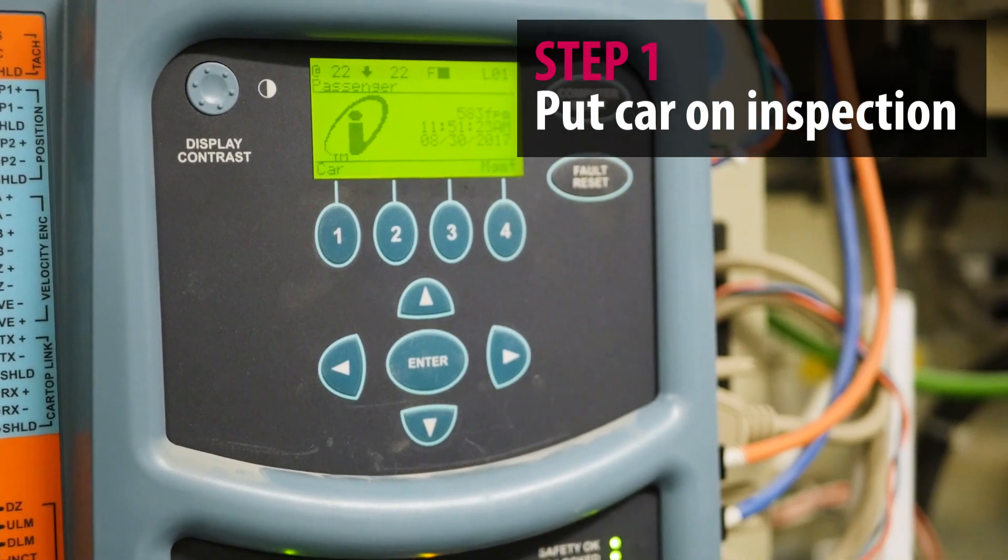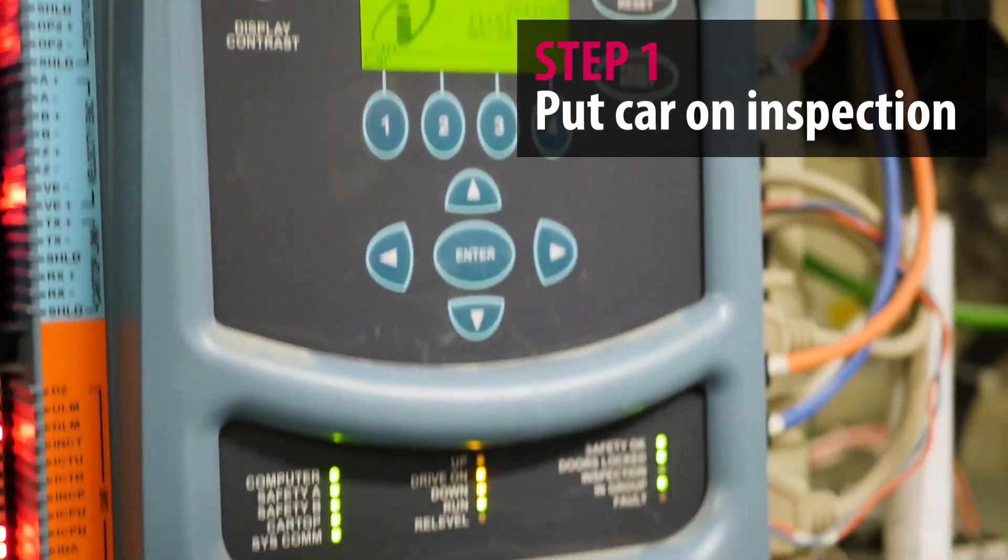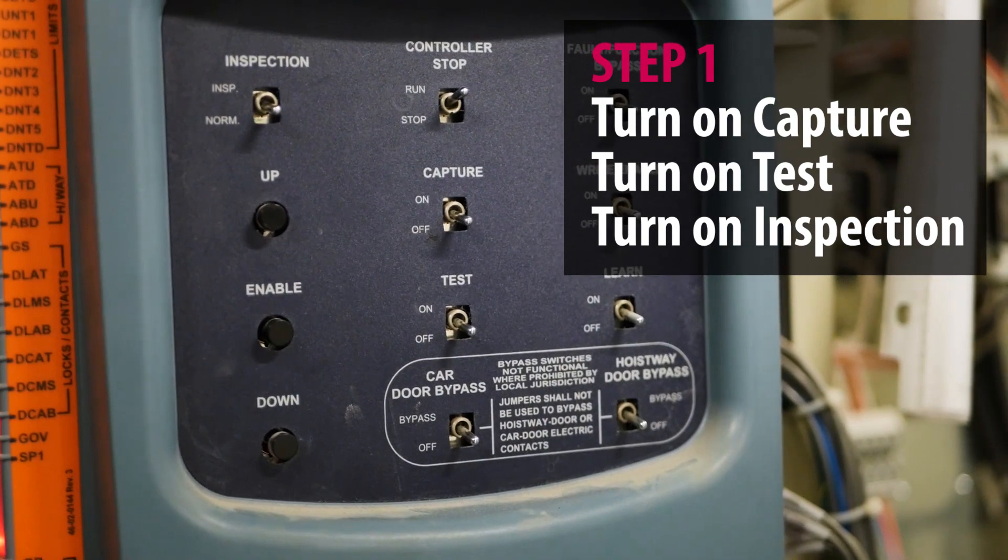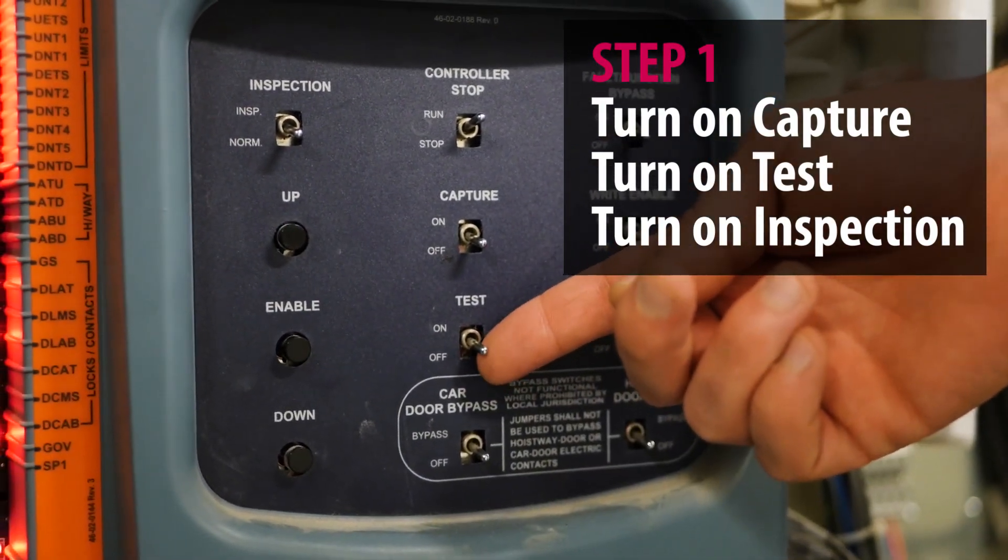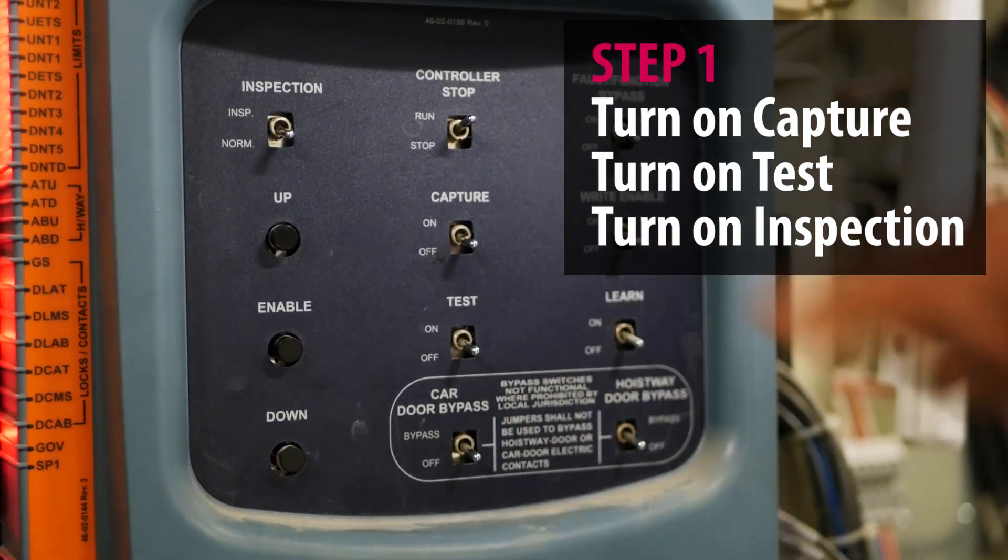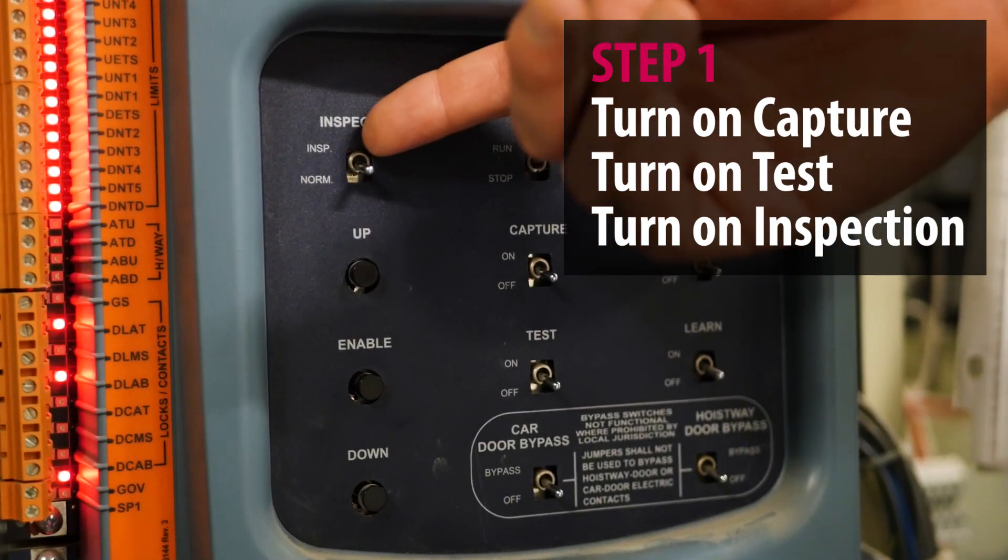You'll need to go to the controller. You've got to take control of the car. Put the car on capture by flipping this toggle switch up, then put it on test by flipping this toggle switch up, and put the car on inspection by flipping this toggle switch up.